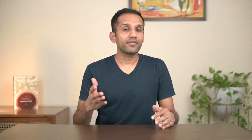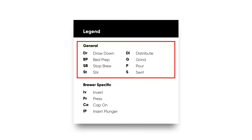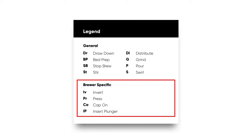Next up we have the legend. Here's where you see the list of abbreviations of all the possible events. It's broken up into two sections — the first being general events that are applicable to all brewer types, and the next is brewer specific, which are events that are only applicable to a given brewer. For example, insert plunger would only apply to an AeroPress and not a V60.